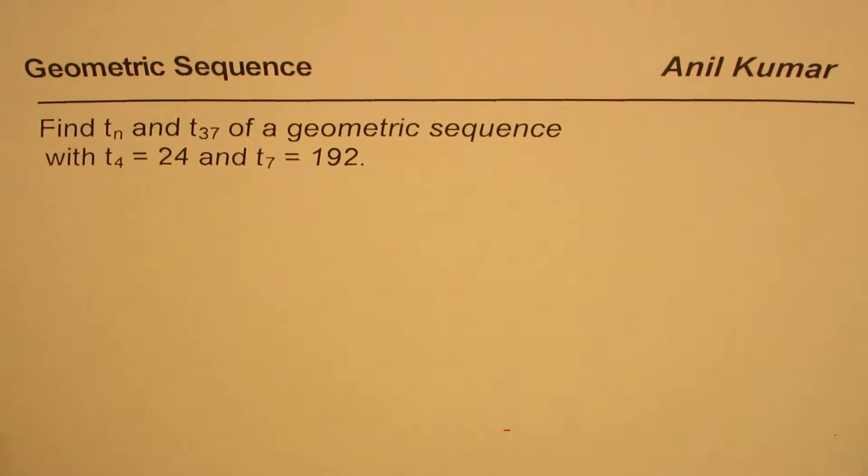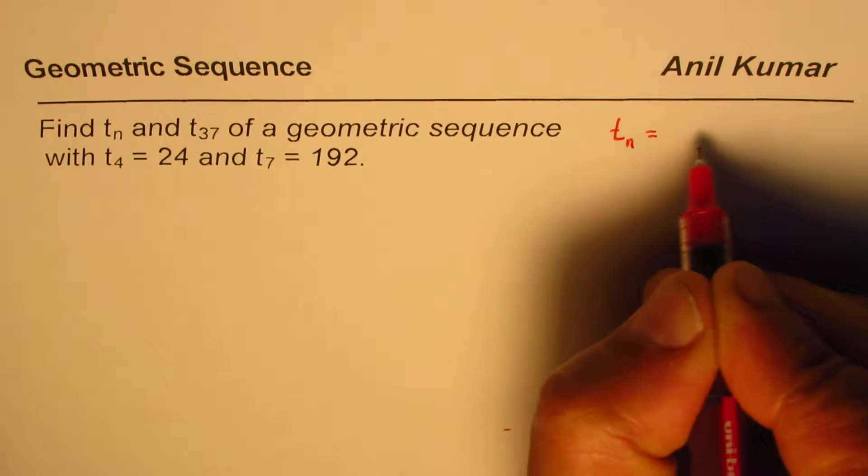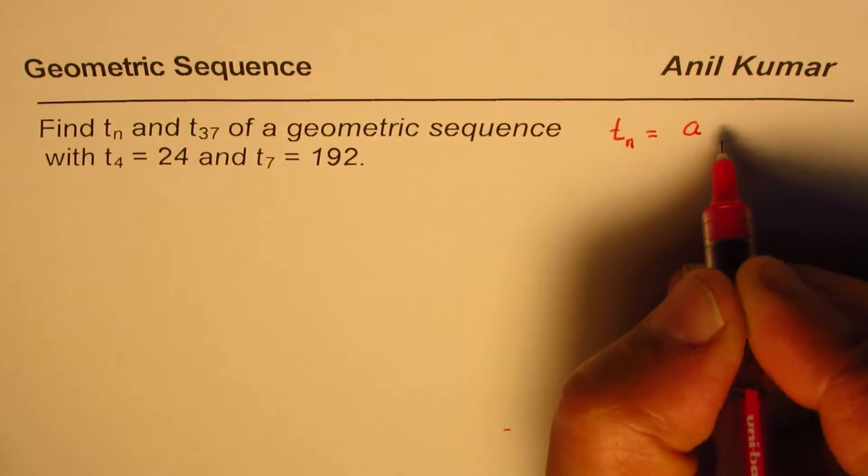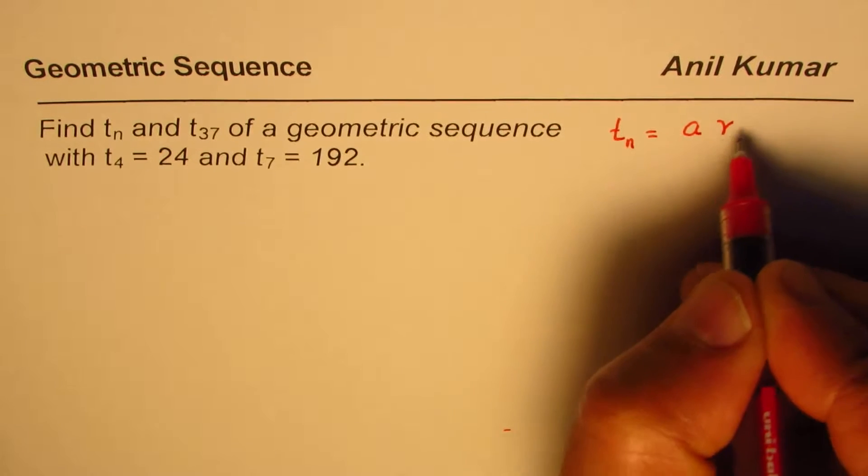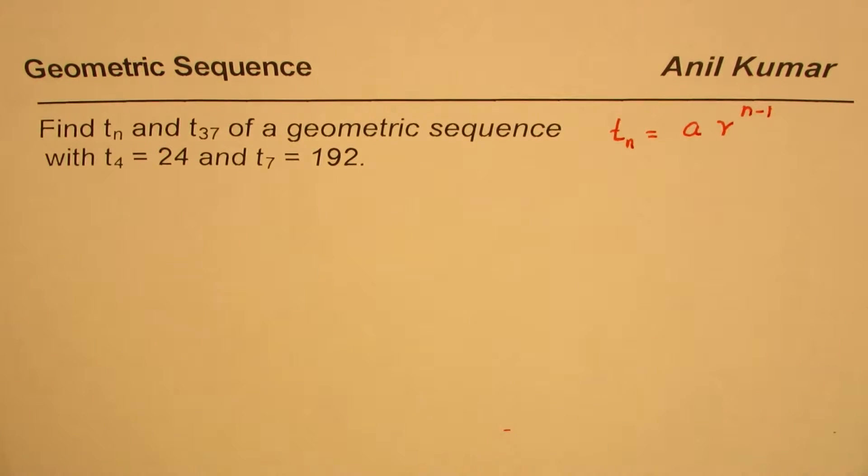As you know, the general formula in a geometric series is the nth term equals the first term a times r to the power of n minus 1, where r is the ratio by which each term in the geometric sequence is multiplied. So that's the formula which we're going to use to solve this question.